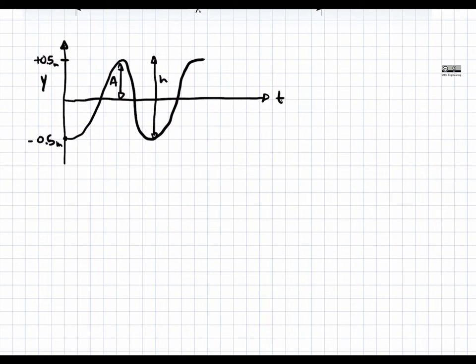But let's write this function down again. Y of t is equal to negative 0.5 times cosine of 0.419 times t. And this cosine has the following form: amplitude times cosine of omega t plus phi. So we have our amplitude, our frequency, and our phase.